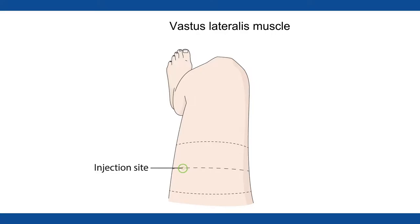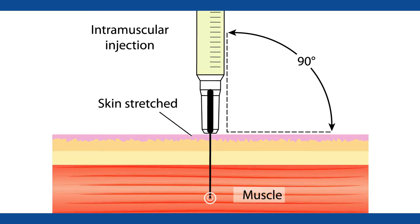The anterolateral aspect of the thigh can be used as an alternative site for intramuscular injection in older children and adults. For all intramuscular injections, the needle should be long enough to reach the muscle mass and prevent the vaccine from seeping into subcutaneous tissue, but not so long as to involve underlying nerves, blood vessels or bone.